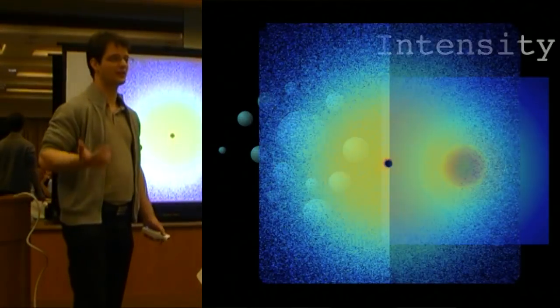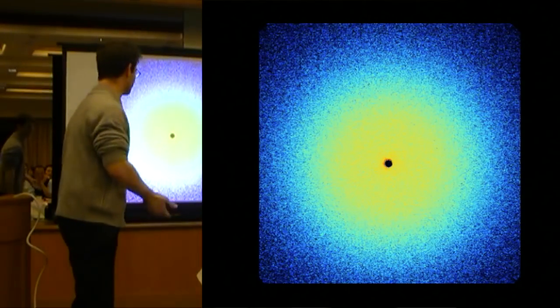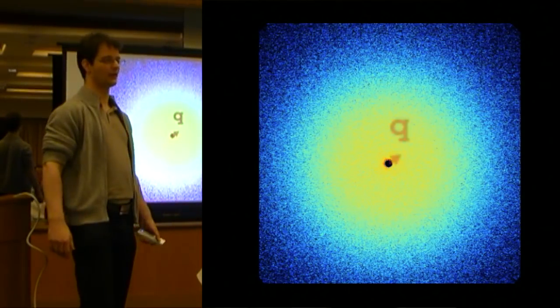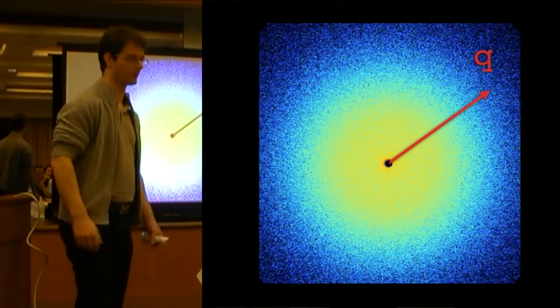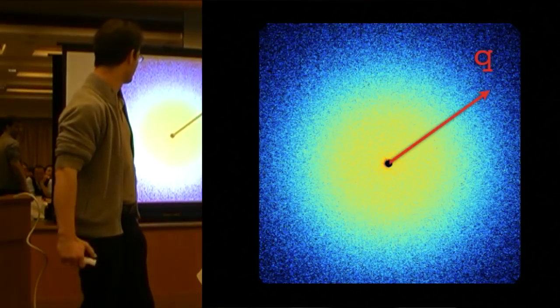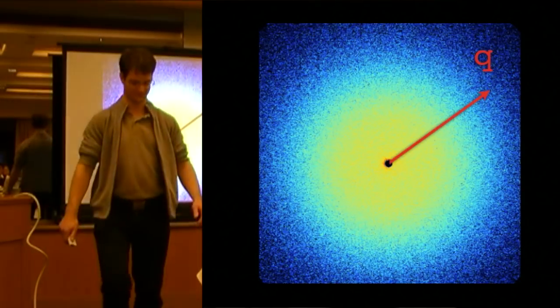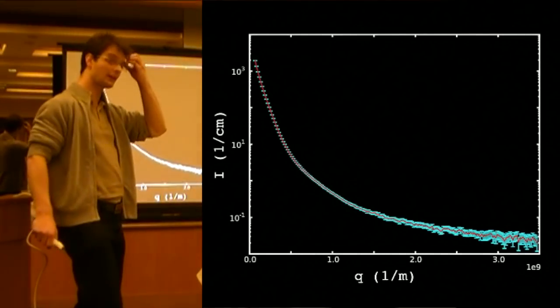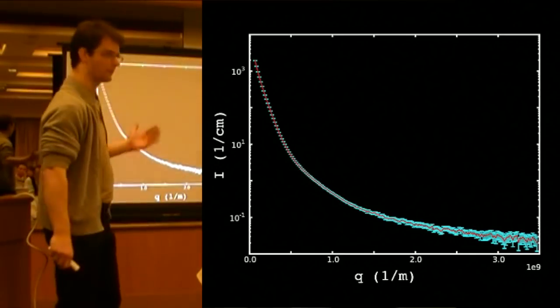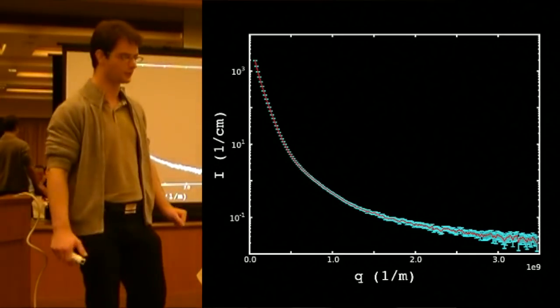So what we're interested in isotropic systems or spherical systems is only the intensity as a function of the distance from the beam, from the direct beam. You can see the shadow of the beam stop here where we've stopped the direct beam. So if we plot this, it looks something like this. Of course, we measure on absolute scale and with statistics for each of our data points.